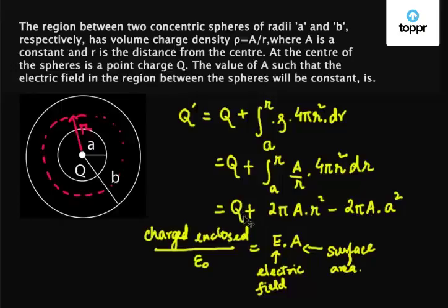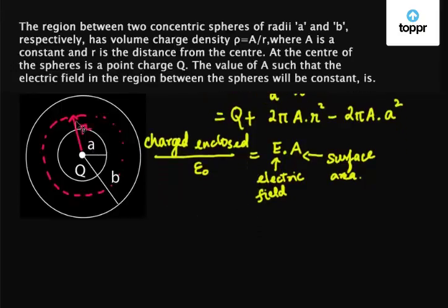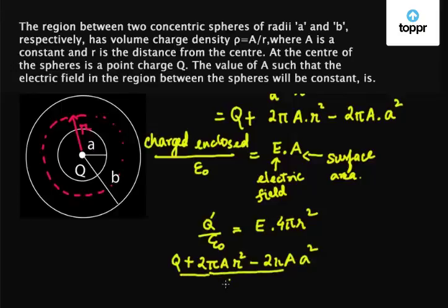So from above, we can see that the charge enclosed in this region of radius R. So here we have Q dash upon epsilon naught equals E dot 4 pi r squared. Now Q dash as we got from this equation is Q plus 2 pi A into r squared minus 2 pi A into a squared. So we substitute the value of Q dash here to get Q plus 2 pi A r squared minus 2 pi A a squared upon epsilon naught equals E into 4 pi r squared.